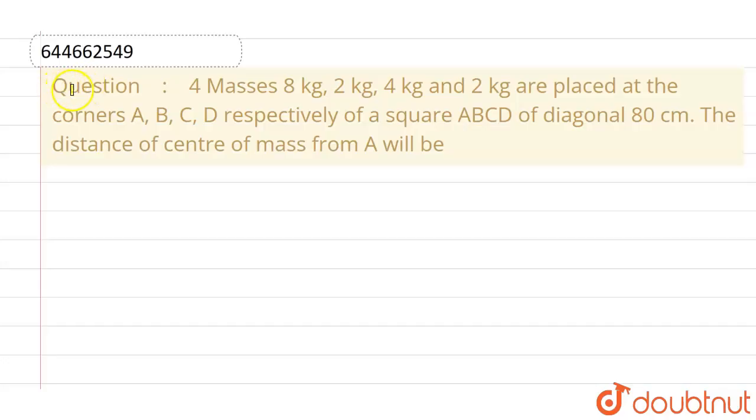Hello everyone, if we talk about this question, this given question is 4 masses: 8 kg, 2 kg, 4 kg and 2 kg are placed at the corners A, B, C, D respectively of a square ABCD whose diagonal is 80 cm. The distance of center of mass from A will be.